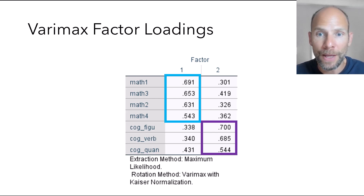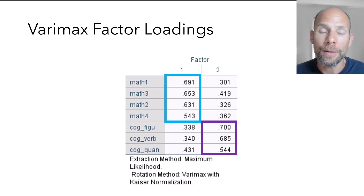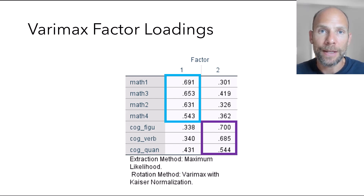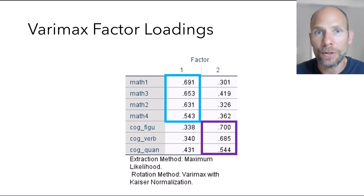Here we don't have great simple structure because of the cross loadings on the other factors. For example, cross loadings of the math variables on the second factor range between 0.3 and 0.42 — that is substantial. Likewise, the cognitive ability variables also cross load between 0.34 and 0.43 on the math factor. This reflects the fact that these two factors in reality are not uncorrelated — it reflects the overlap in measurement between the math variables and the cognitive ability variables, because they measure something related.